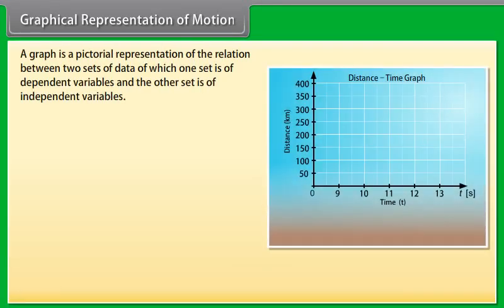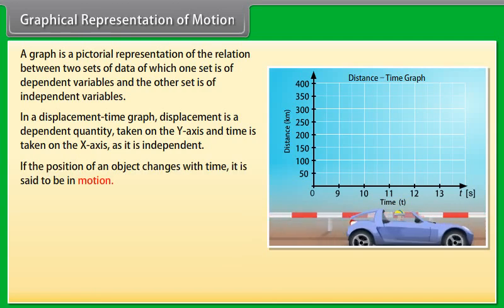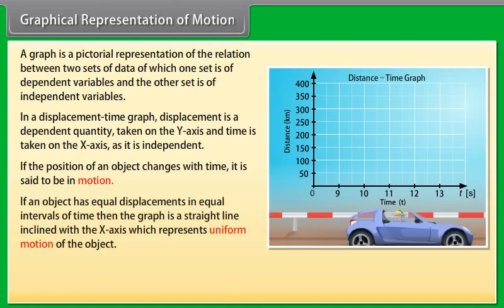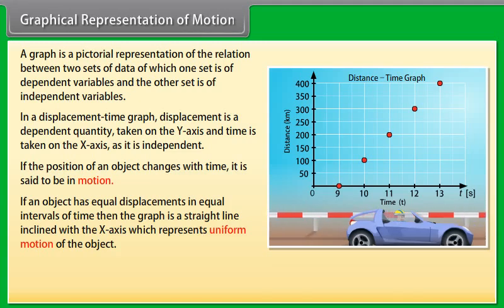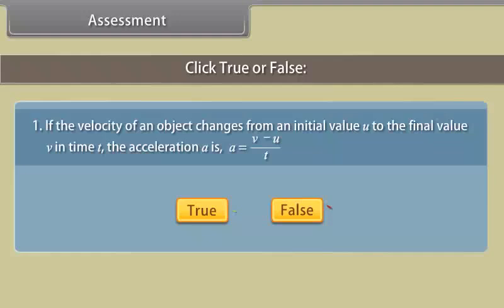Graphical representation of motion: A graph is a pictorial representation of the relation between two sets of data — dependent and independent variables. In a displacement-time graph, displacement is the dependent quantity on the y-axis and time is on the x-axis. If an object has equal displacements in equal intervals of time, the graph is a straight line inclined with the x-axis, representing uniform motion. If the graph is a curve, it represents non-uniform motion. The slope of the displacement-time graph gives the velocity of the object.